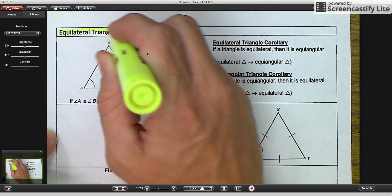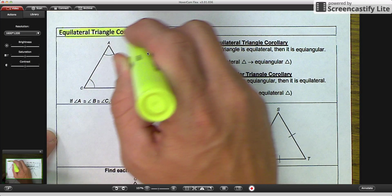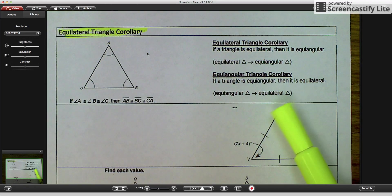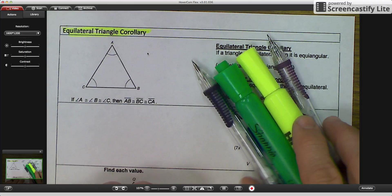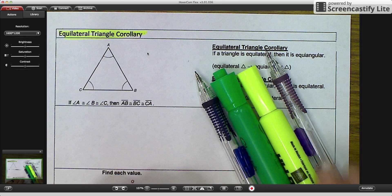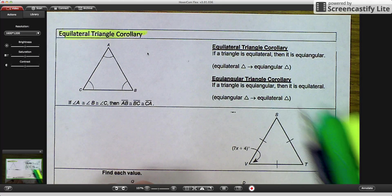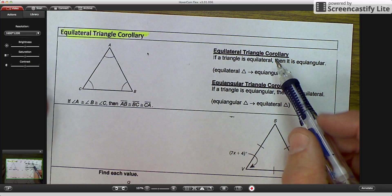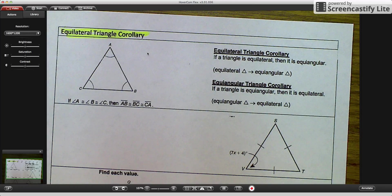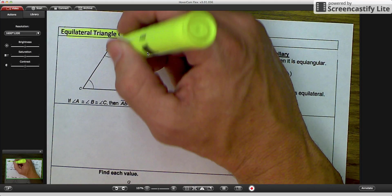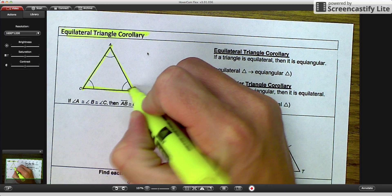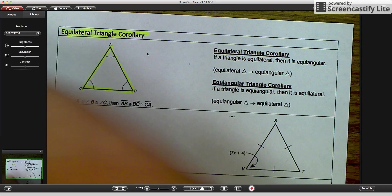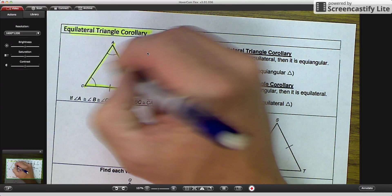We talked about isosceles triangles. Now we're going to take it one step further. Remember to have lots of pens and pencils to write down some of these. I have two highlighters, I have two pencils today. So the equilateral triangle corollary, we have to understand what an equilateral triangle is. An equilateral triangle is a triangle with three congruent sides, or all sides congruent. I'm going to highlight my congruent sides in yellow, and I'm going to put my congruent marking. Congruent, congruent, congruent.